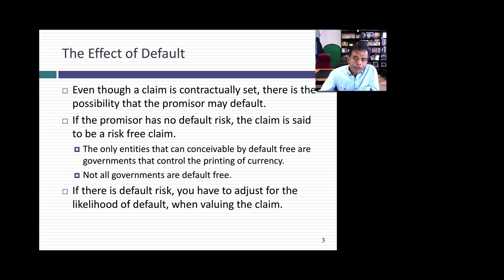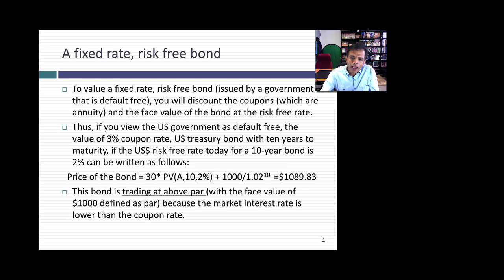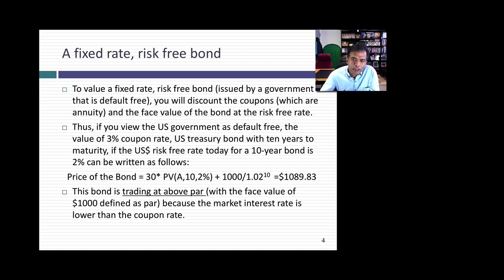Now if there is default risk, things get a little messy and we have to adjust the value of the bond for default risk. But let's take the easy scenario first — let's think about valuing a fixed-rate, risk-free bond. To value a fixed-rate, risk-free bond, I'm going to discount the coupons and the face value of the bond, which are known at the time of valuation, at the risk-free rate.